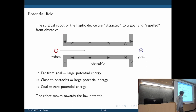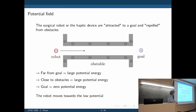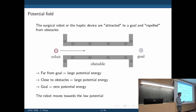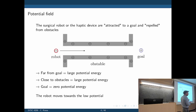The idea is quite simple. We consider the robot, the goal, and obstacles as having different charges. The robot is on one side, the goal on the other, with obstacles in the way. The robot has a negative charge, the obstacles have a negative charge so they repel one another, and the goal has a positive charge attracting the end effector towards it.